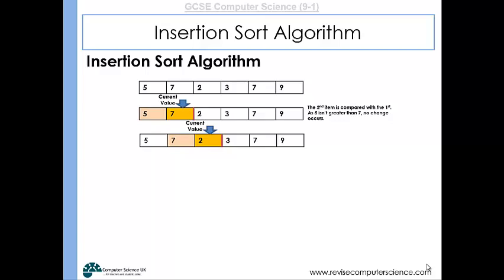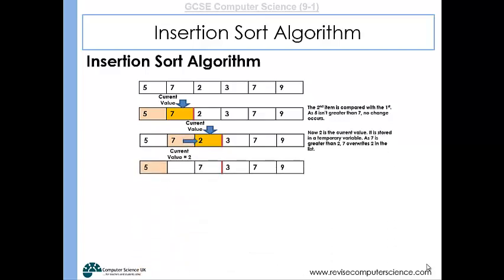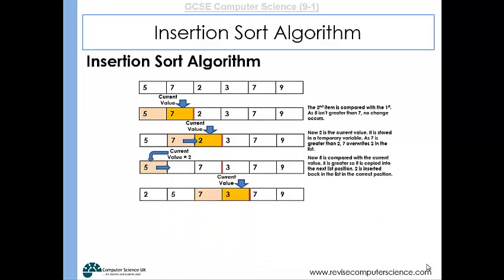The two is then compared with the five, and because the two is less than the five, the five will move up one place. Then the two will be inserted into the first position of that array.